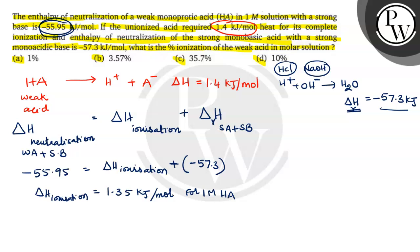But the given thing is 1.4. Yeah, in the question it's given. Unionized acid requires 1.4. When we calculate, we get 1.35. So, we will calculate it in percentage. Okay?